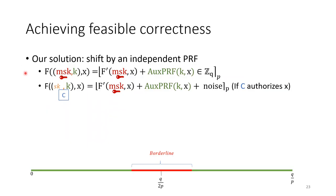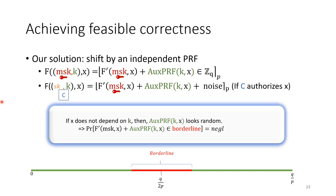We achieve feasible correctness by shifting with an independent PRF. Specifically, we use an auxiliary PRF with key k, concatenate k with the master secret key and the constrained key. To evaluate at input x, we compute f' (or f' plus noise as before), but prior to rounding we add the value of the auxiliary PRF at point x, then round. The key observation is that if x does not depend on the auxiliary PRF key k, then the auxiliary PRF value at x looks random, so the probability that f' plus the auxiliary PRF value lands in the borderline rounding region is negligible.